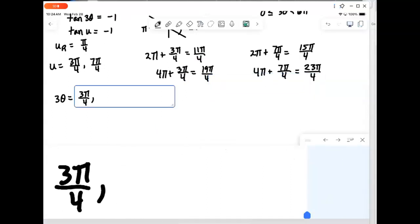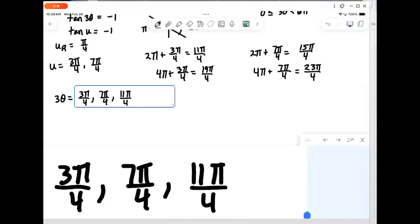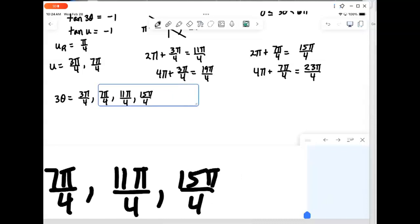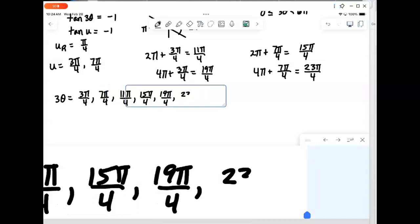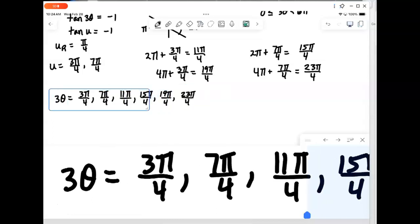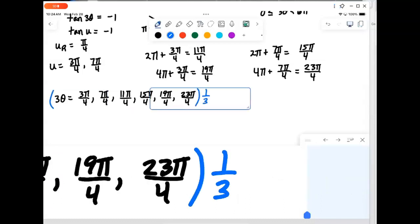So, we're going to have 3 theta equals 3 pi over 4, 7 pi over 4, 11 pi over 4, 15 pi over 4, 19 pi over 4, and 23 pi over 4.